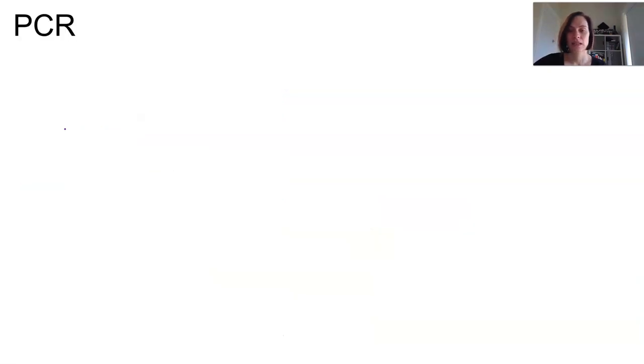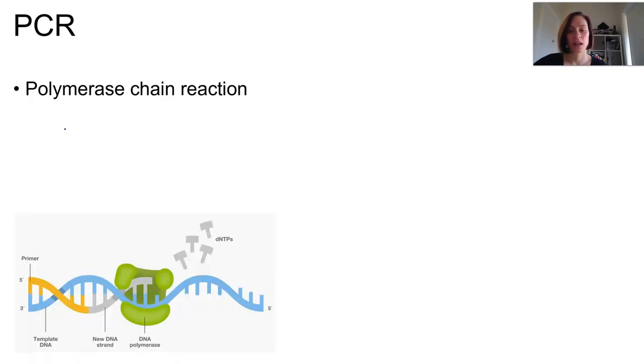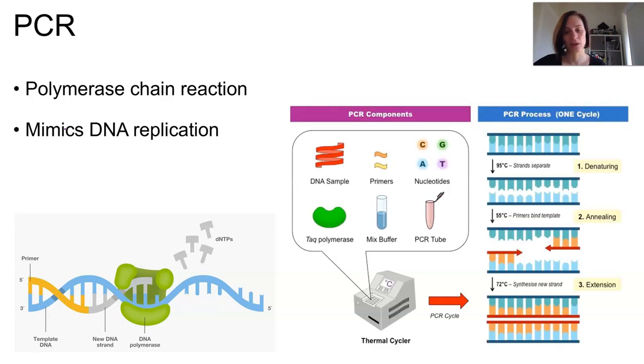So PCR stands for polymerase chain reaction, and it uses a polymerase enzyme to mimic the natural process of DNA replication. So recall that DNA polymerase and RNA polymerase are the enzymes which elongate the newly made DNA or RNA strand in replication or transcription. So essentially to boost the numbers of DNA strands available for these biotechs, PCR mimics that natural process, but in vitro, so outside the cell.